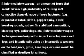Number five: intermediate weapons. This is an amount of force that would have a high probability of causing soft connective tissue damage or bone fractures. Examples include an expandable baton, baton, pepper spray, taser, bean bag rounds, rubber fin-stabilized ammunition, mace spray, police dog, etc. Intermediate weapon techniques are designed to impact muscles, arms, and legs. Intentionally using an intermediate weapon on the head, neck, groin, kneecaps, or spine would be classified as deadly or lethal force.